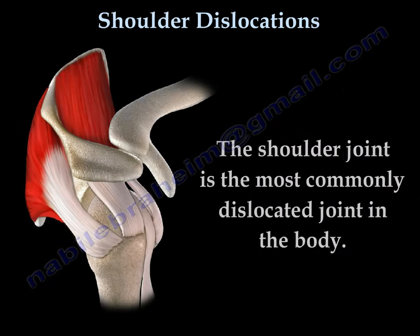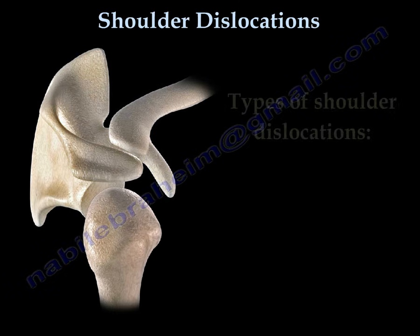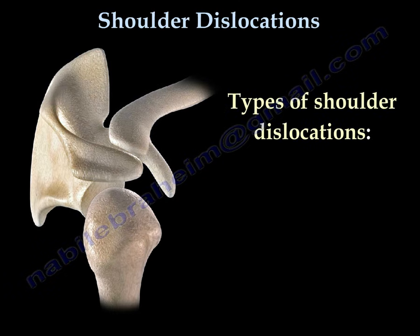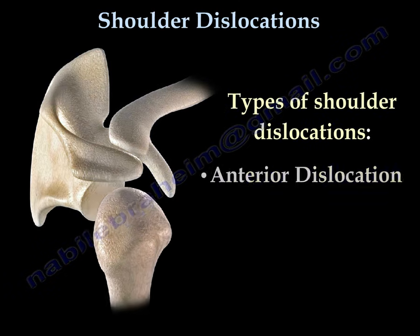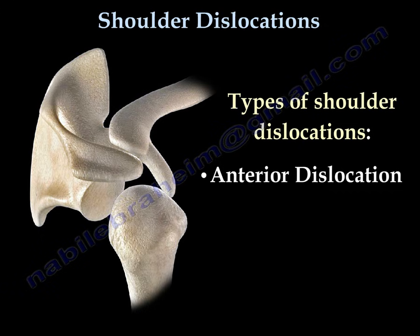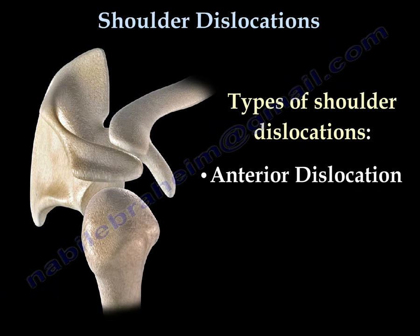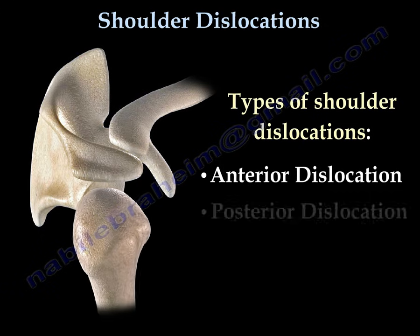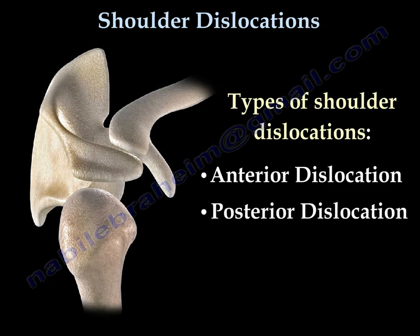The shoulder joint is the most commonly dislocated joint in the body. Types of shoulder dislocations include anterior dislocation and posterior dislocation.